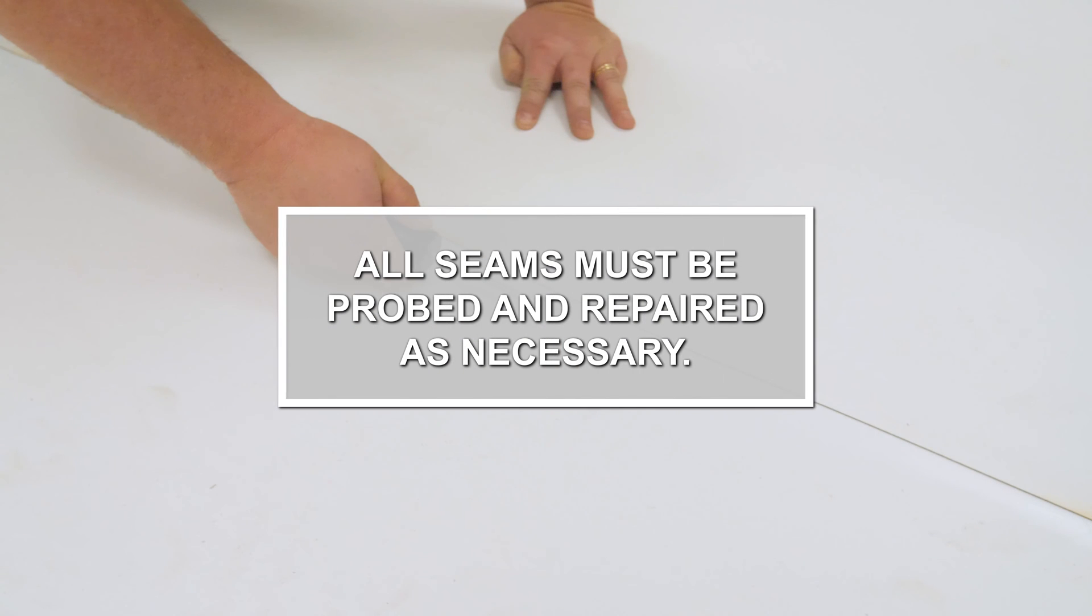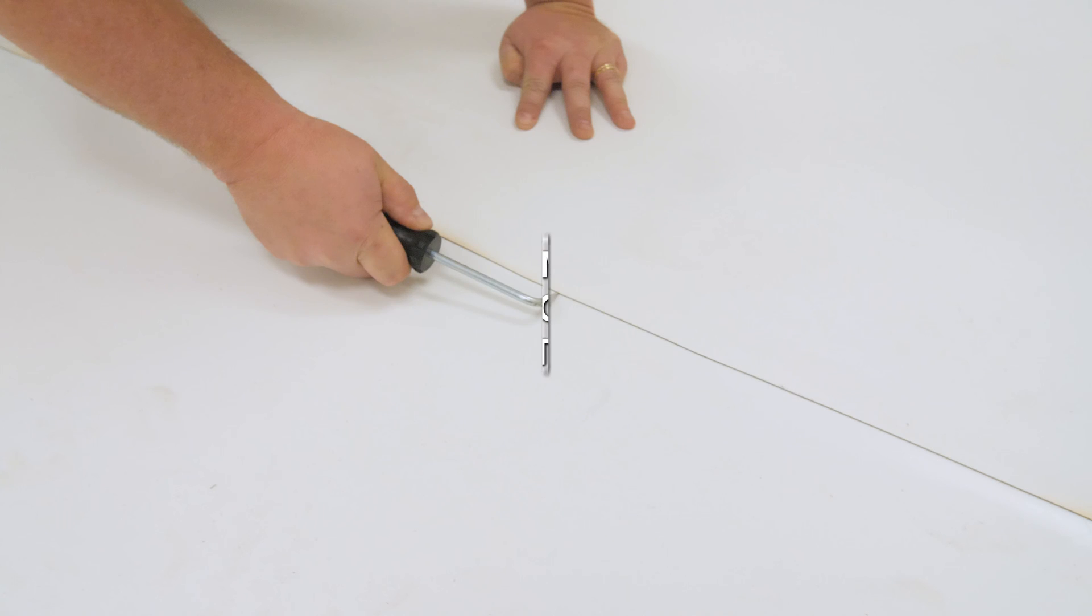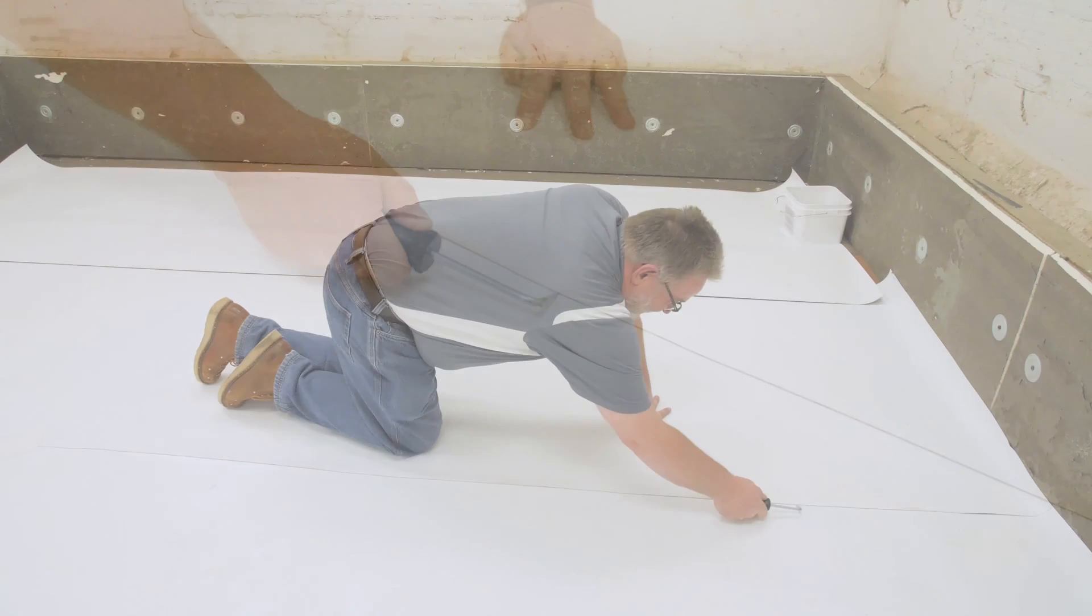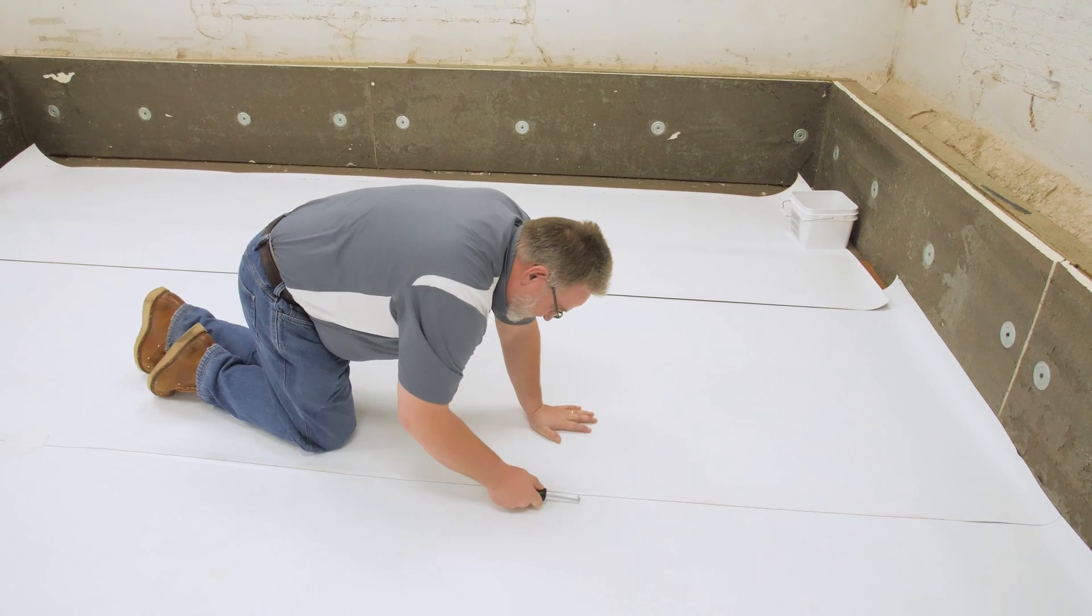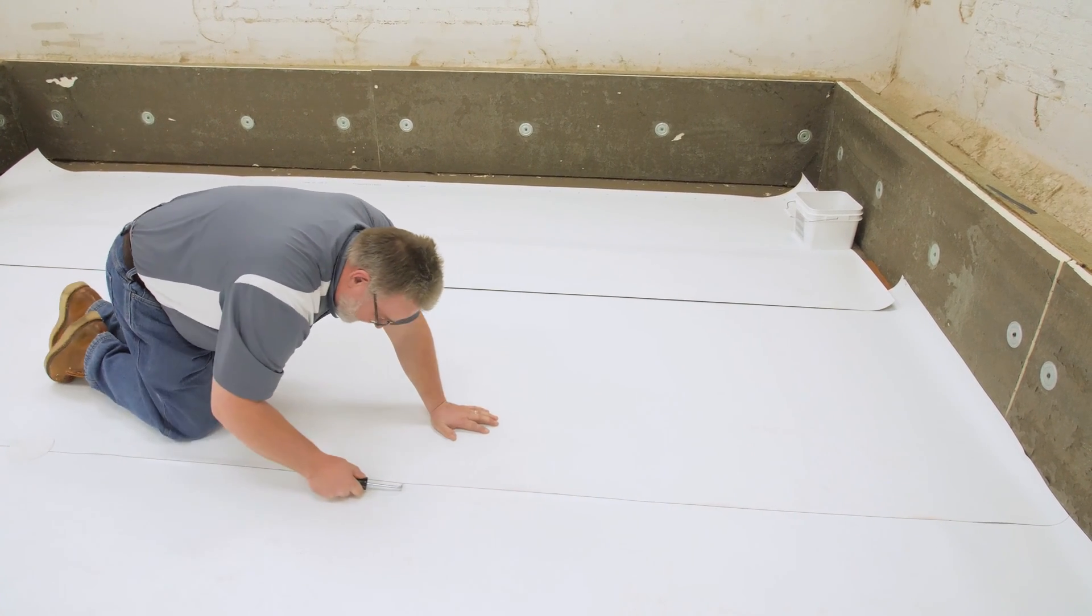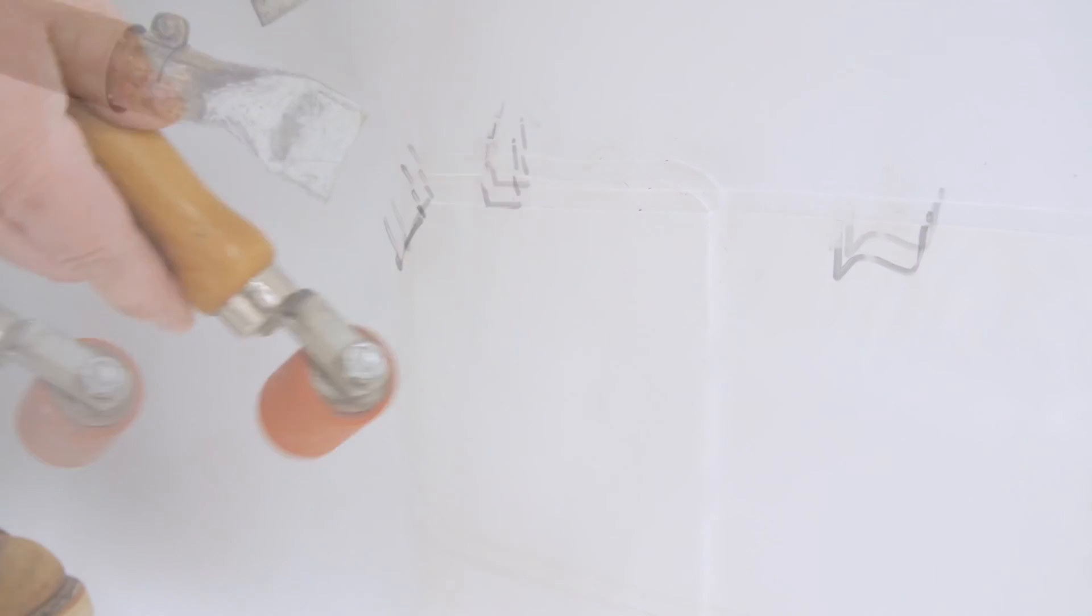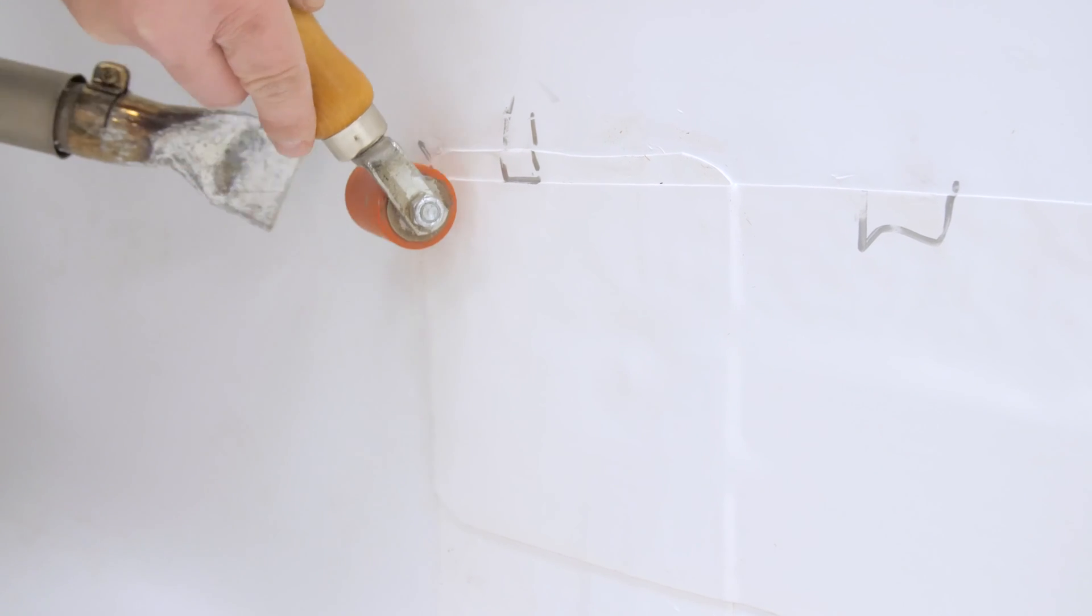All seams must be probed and repaired as necessary. Allow the membrane to cool. Probing seams that have not thoroughly cooled will create damage. Using pressure, run the seam probe along the edge of the seam looking for voids. Mark the beginning and end of each void so it can be found easily for repair. To repair, simply reheat with a heat gun and roll to weld the void.